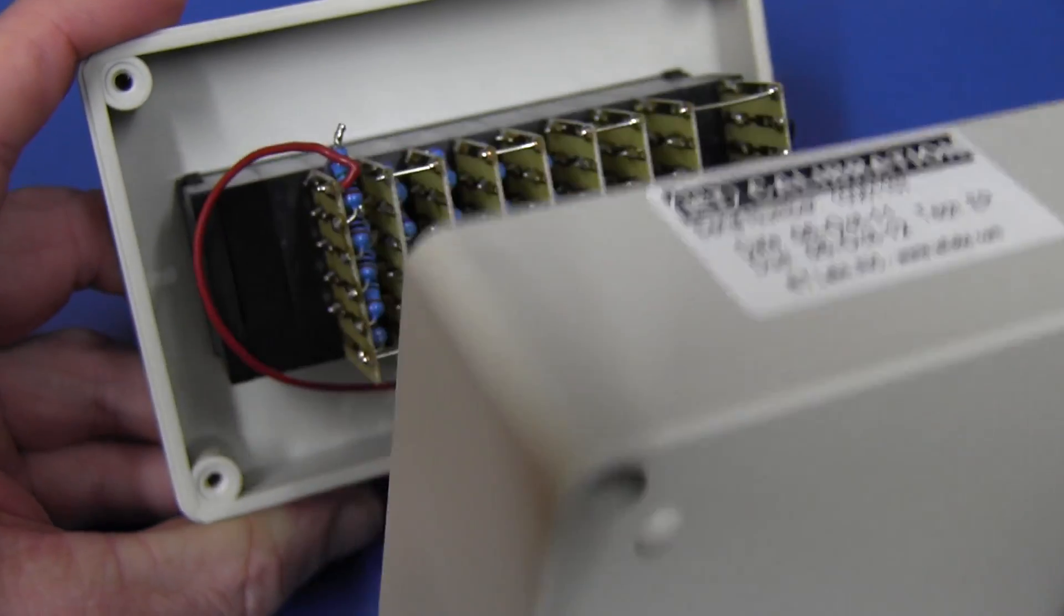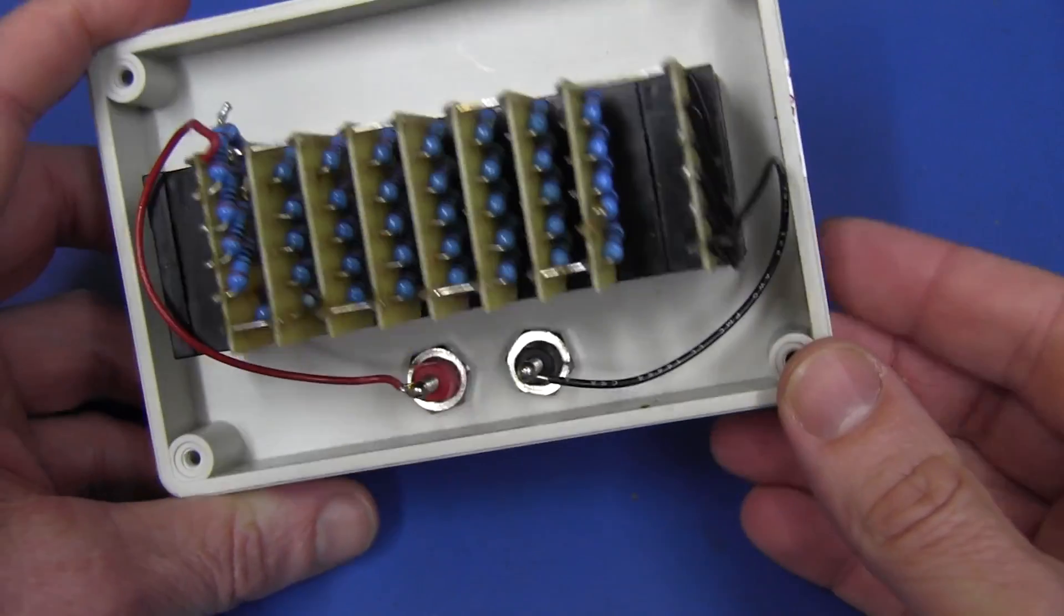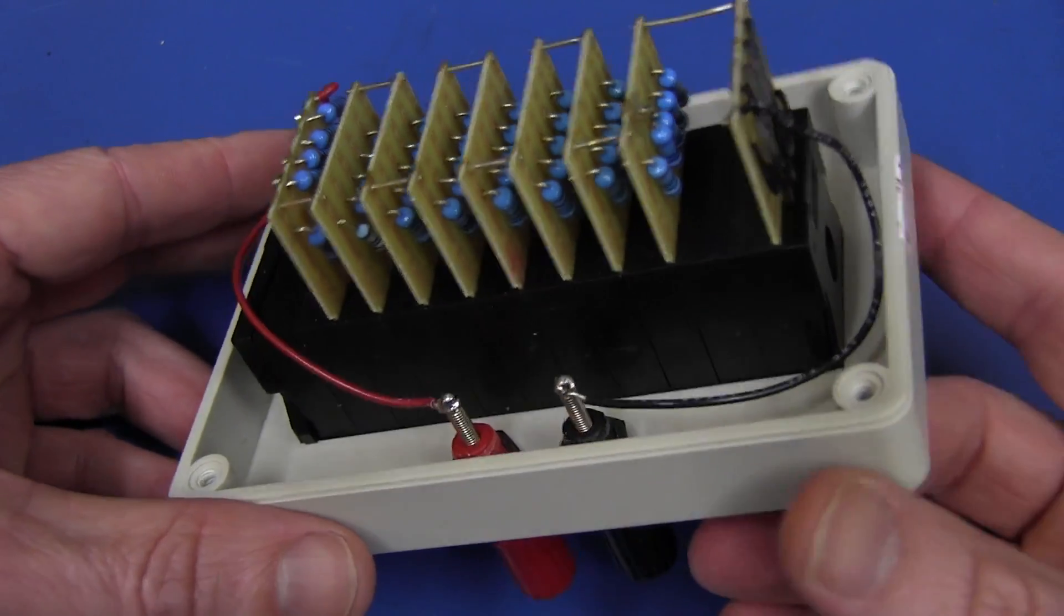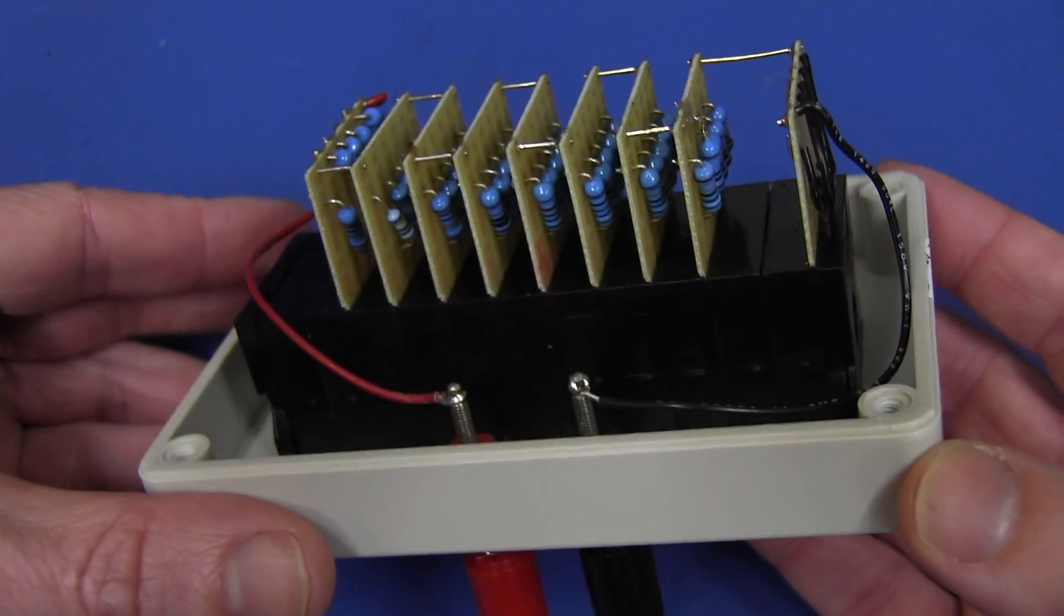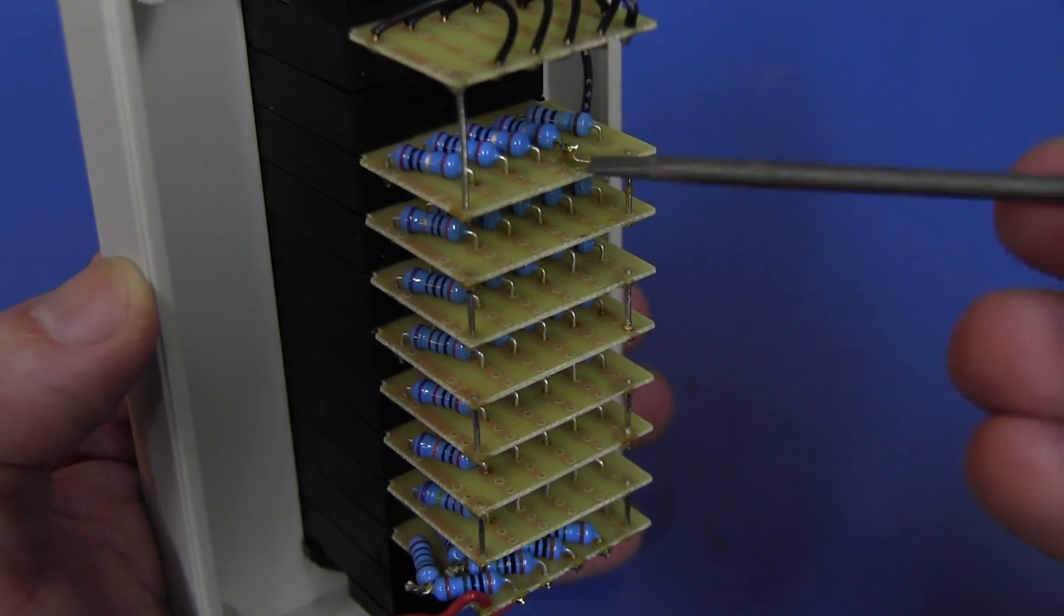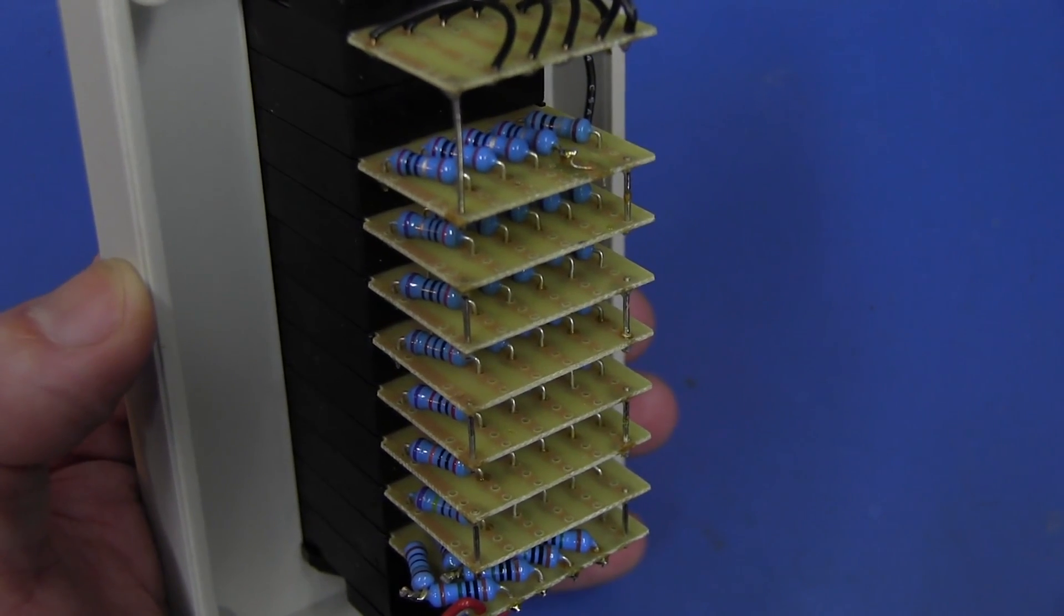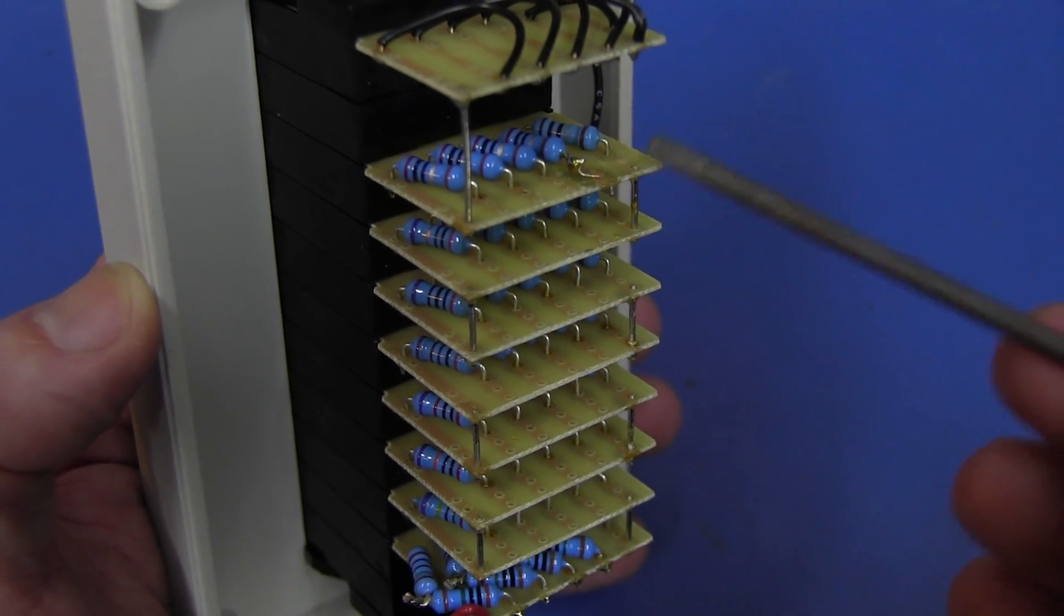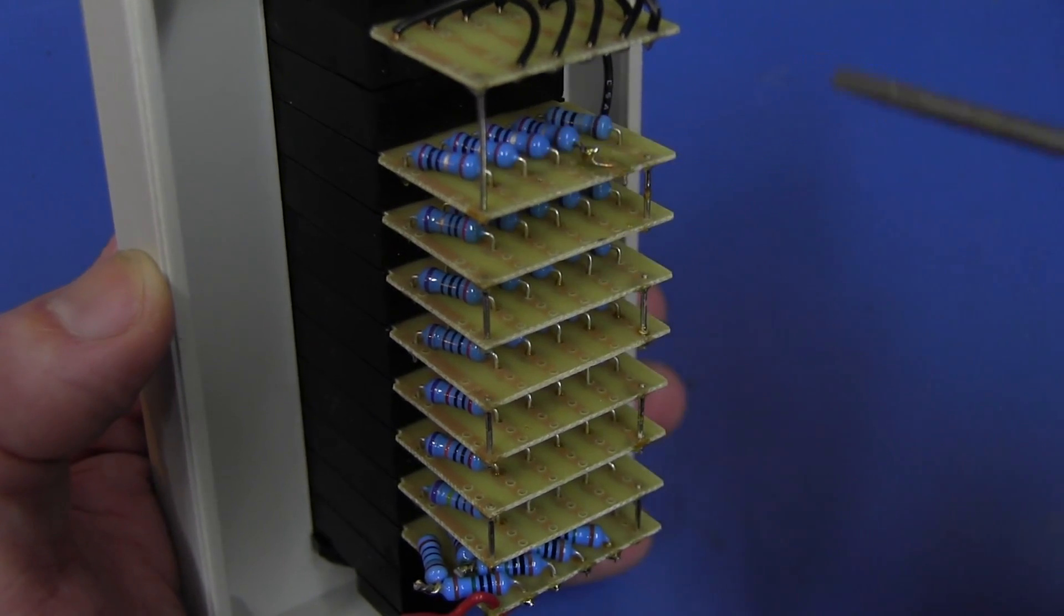And here we go. Let's have a look inside. Ta-da. Thumb wheel switches. No surprises there whatsoever. That's exactly what I expected. A whole bunch of precision resistors mounted on the thumb wheel switches. Now, if you take a look, there's only five resistors per decade. And that's not what I was expecting at all. I was expecting the more traditional 10 resistors per decade and having a 10 position thumb wheel switch. But they haven't. They've gone for the reduced resistor count here.